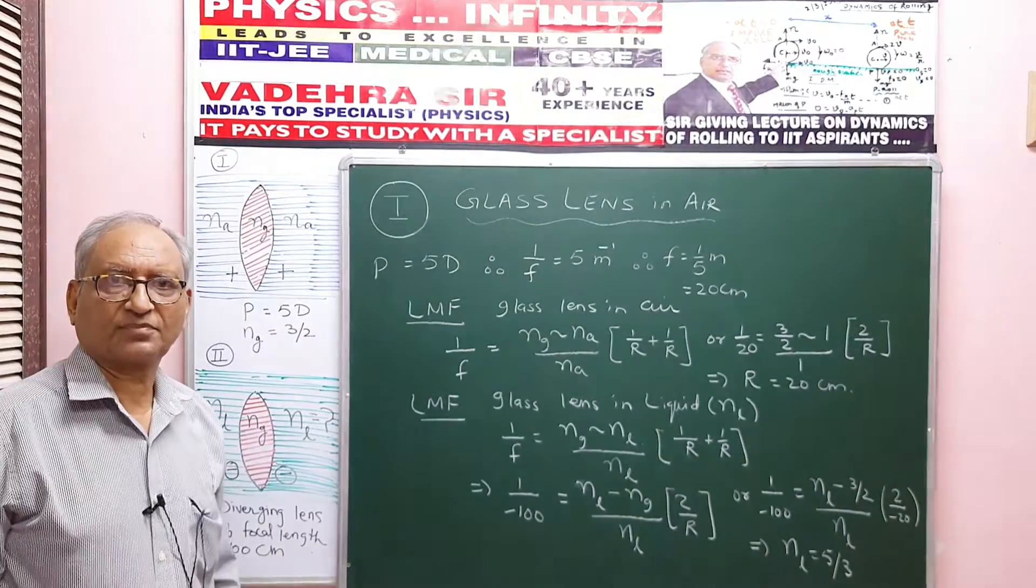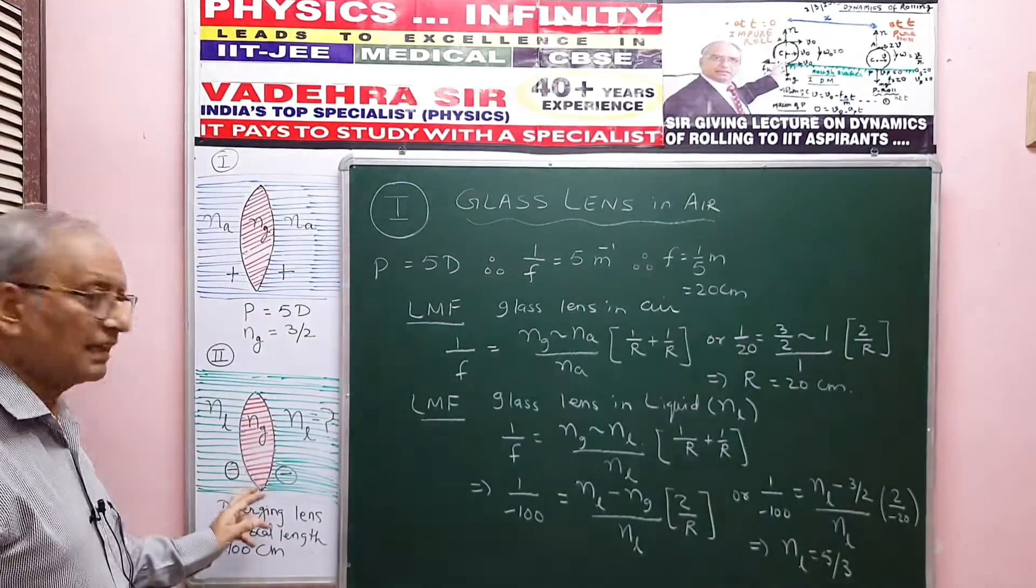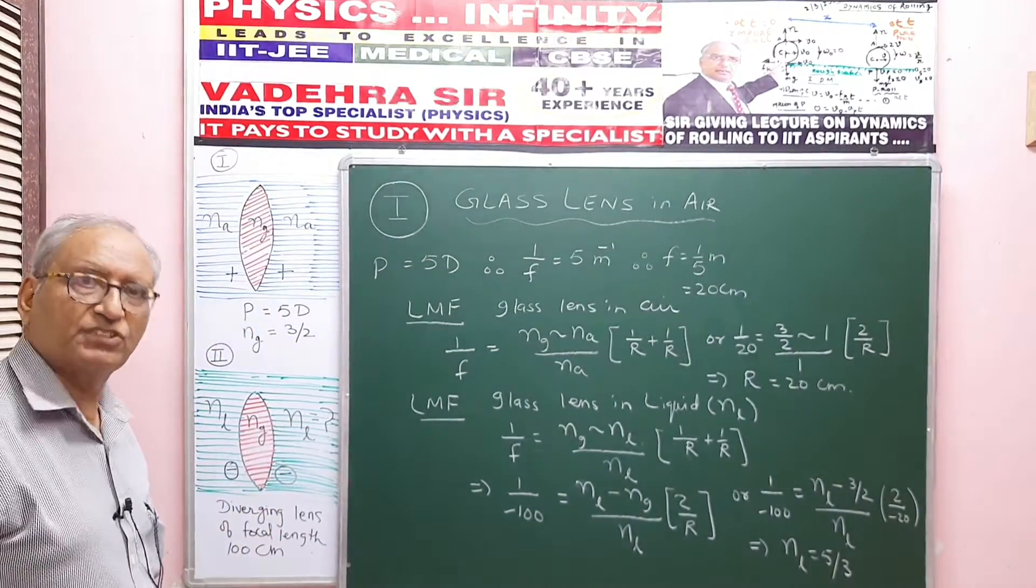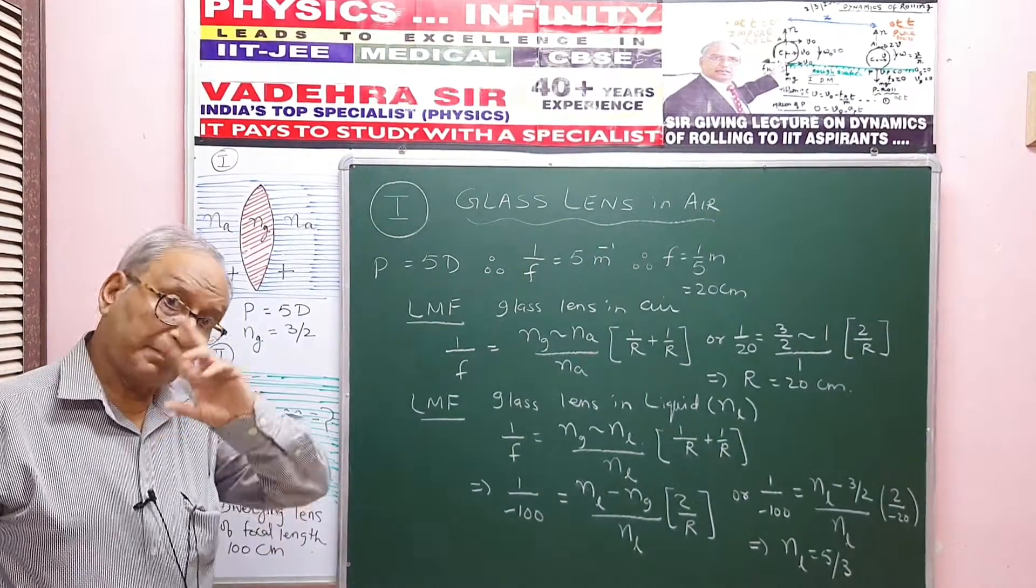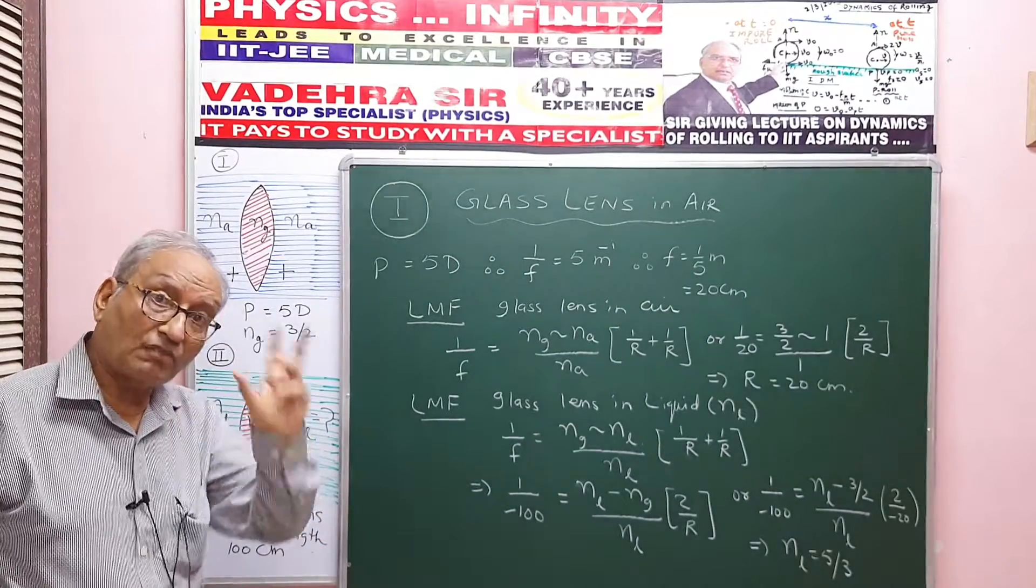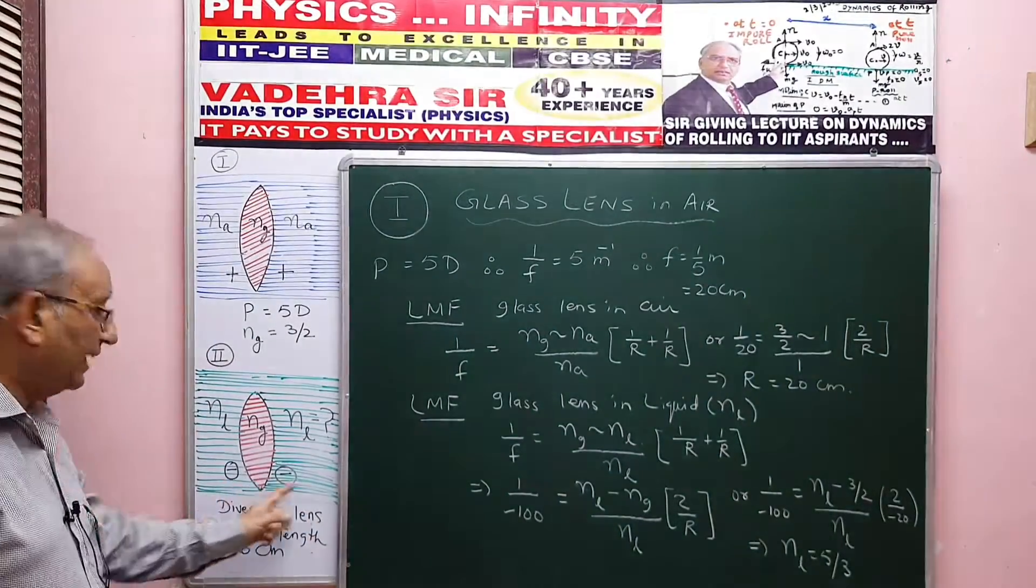And when the same lens is kept in a liquid, it becomes a diverging lens. Diverging lens will have negative optical power, and because it is equi-convex, now equi-convex will become equi-concave. That's why I write minus here, equi-concave.